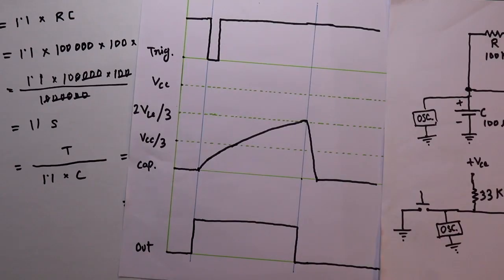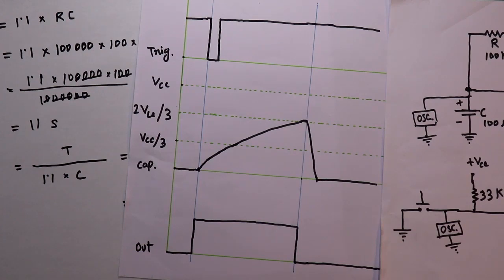So this is all about the practical explanation of monostable mode of the 555 IC. I hope you liked this video. If so, please like, share, and subscribe to my channel. If you have any doubts, let me know in the comments. In the next video I will show you another topic — till then stay happy and I'll see you next time. Thanks for watching.